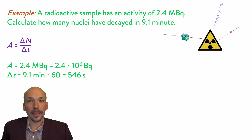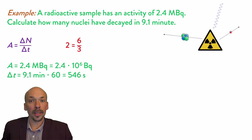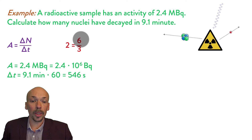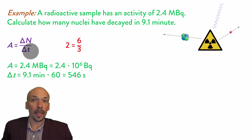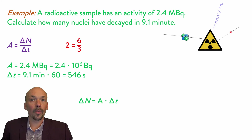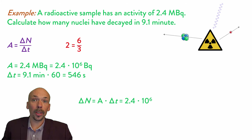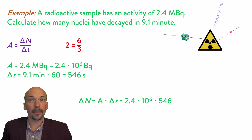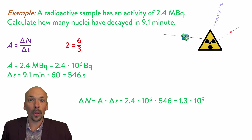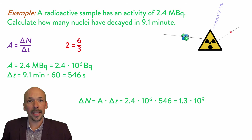Now we want to calculate how many nuclei have decayed, so we need to rearrange the equation. Using the example that 6 divided by 3 is 2 — if we want to find the 6, we do 2 times 3. So the number of decays equals the activity multiplied by the time. For the activity we put in 2.4 times 10 to the power of 6, and we multiply this by the time, 546 seconds. We get 1.3 times 10 to the power of 9. So in 9.1 minutes, 1.3 times 10 to the power of 9 nuclei will have decayed.